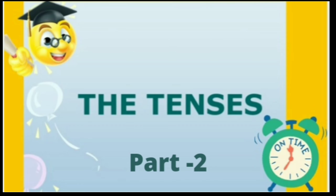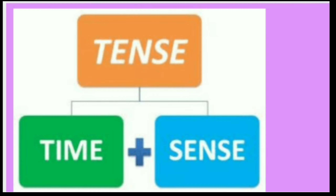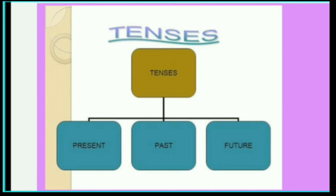As we have studied earlier, tense is time sense. The word came from 'tempus.' It tells us about the action and at what time it takes place. Tenses are of three types: present, past, and future. The action is done in present time, before, or it is going to happen next.